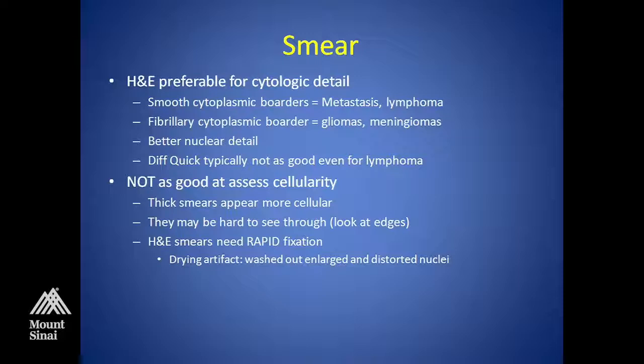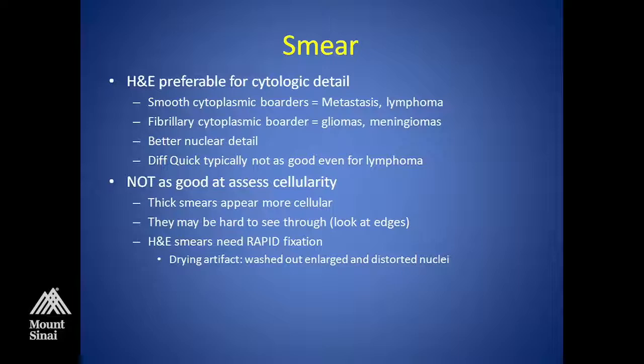I usually like to do H&E — that's what I'm used to looking at. I don't like doing Diff-Quiks. Even if I'm told they think it might be a lymphoma, I prefer H&E. Diff-Quiks are better for looking at nuclear morphology for lymphoid cells, so if you don't have a lymphoma, it's not ideal. If you do an H&E, you have to get it into the alcohol immediately. I have the alcohol container sitting right next to where I'm doing the smear. You get good fixation and you don't get drying artifacts.